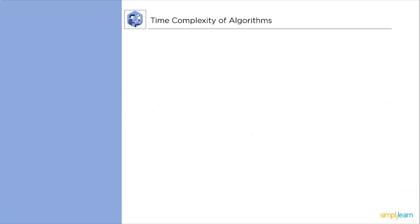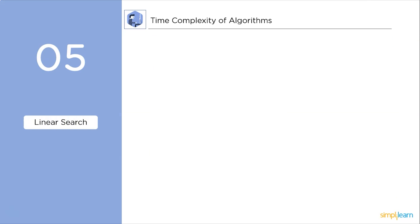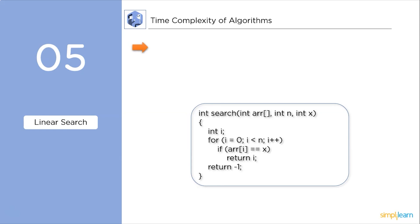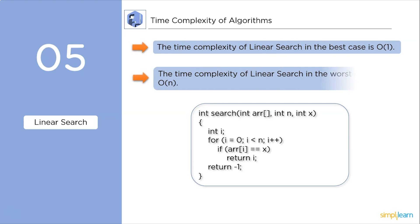Now we will discuss some of the searching algorithms. First up, linear search. In the best case scenario, if the element to be searched is at the first position, then the time complexity will come out to be constant O(1). Whereas in the worst case, the time complexity will come out to be O(n).